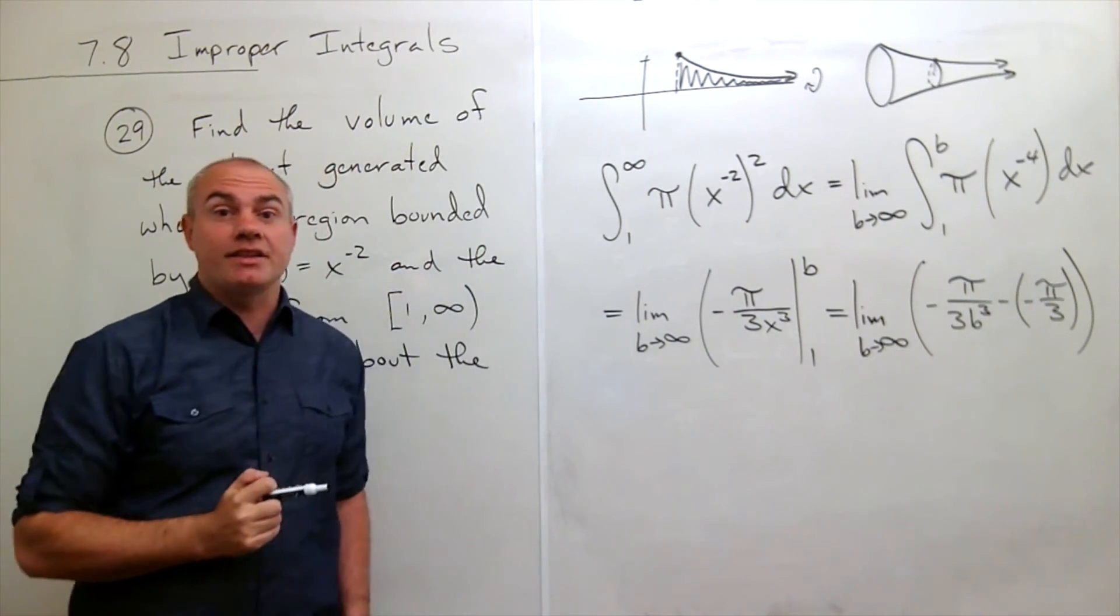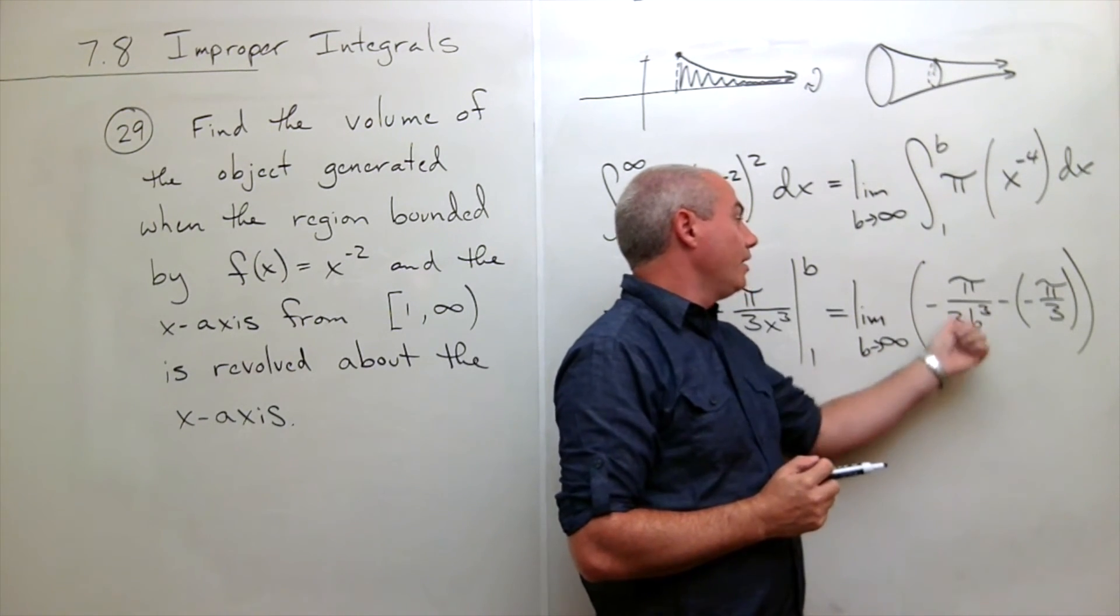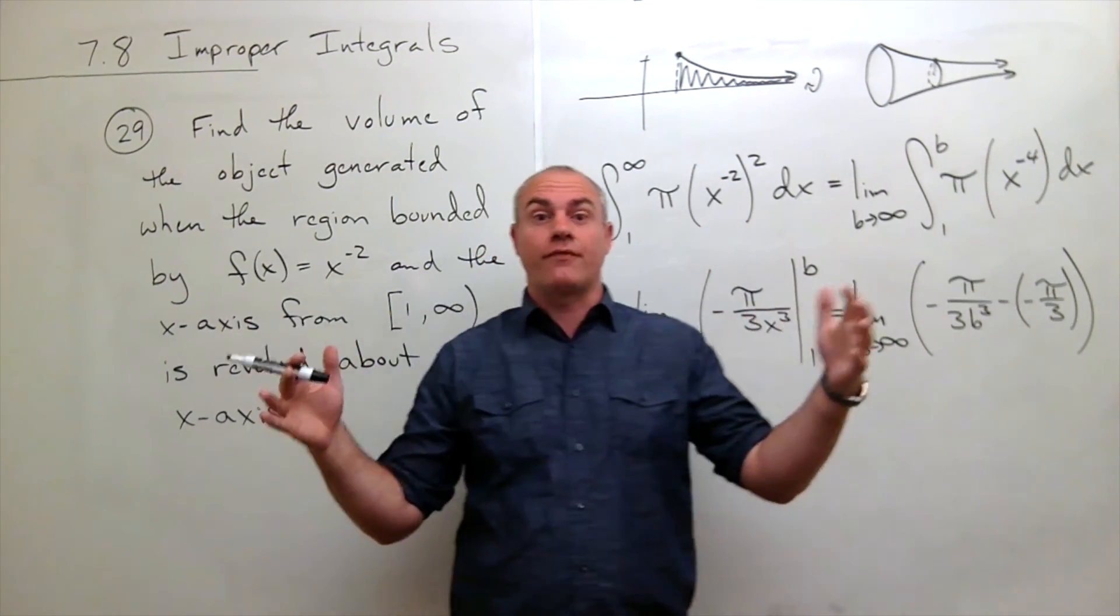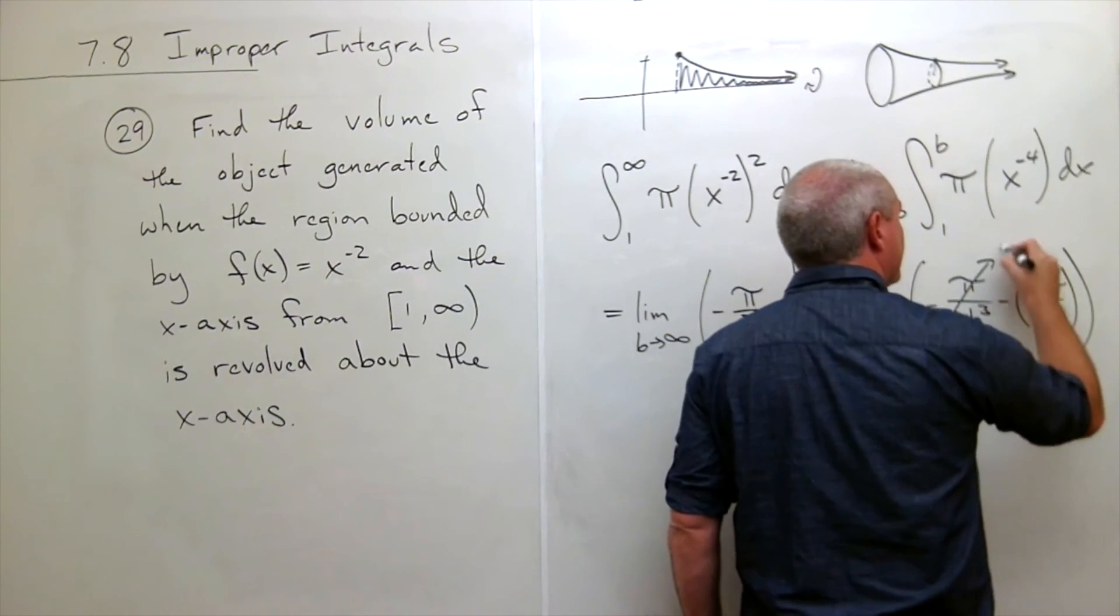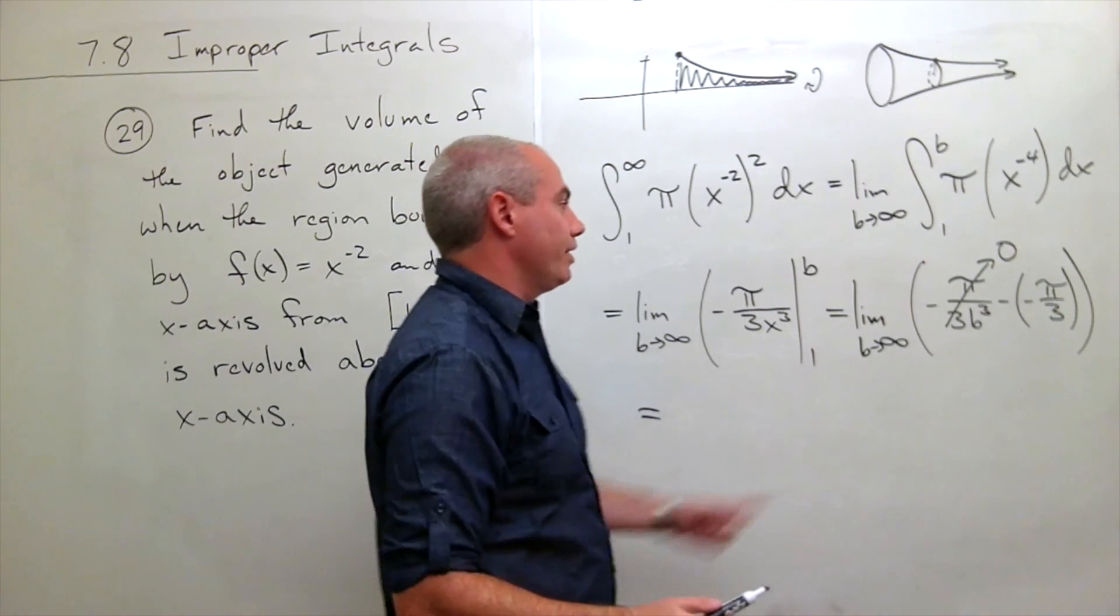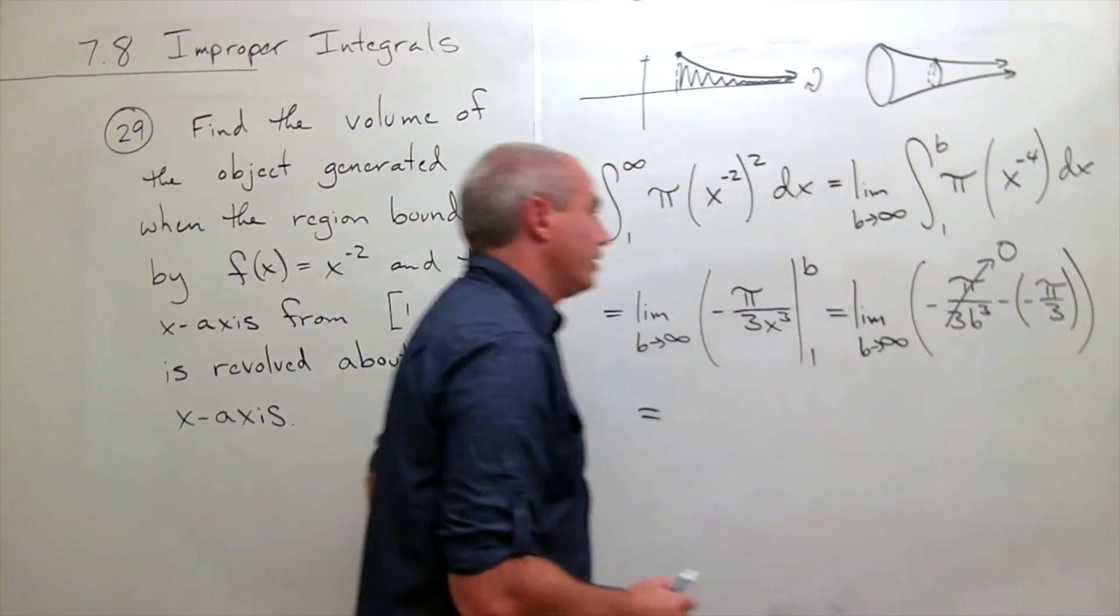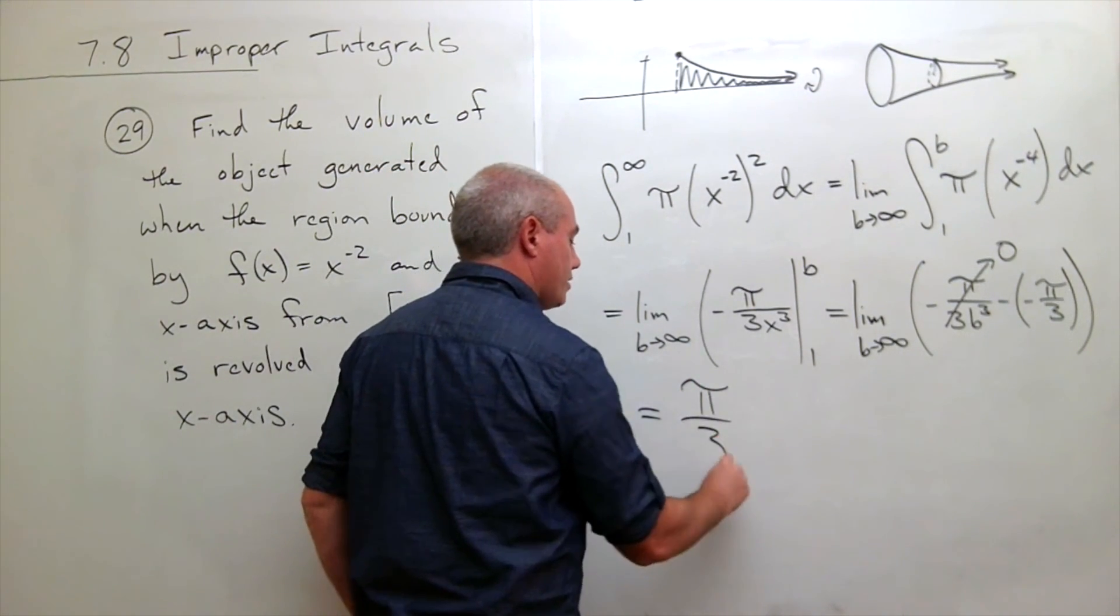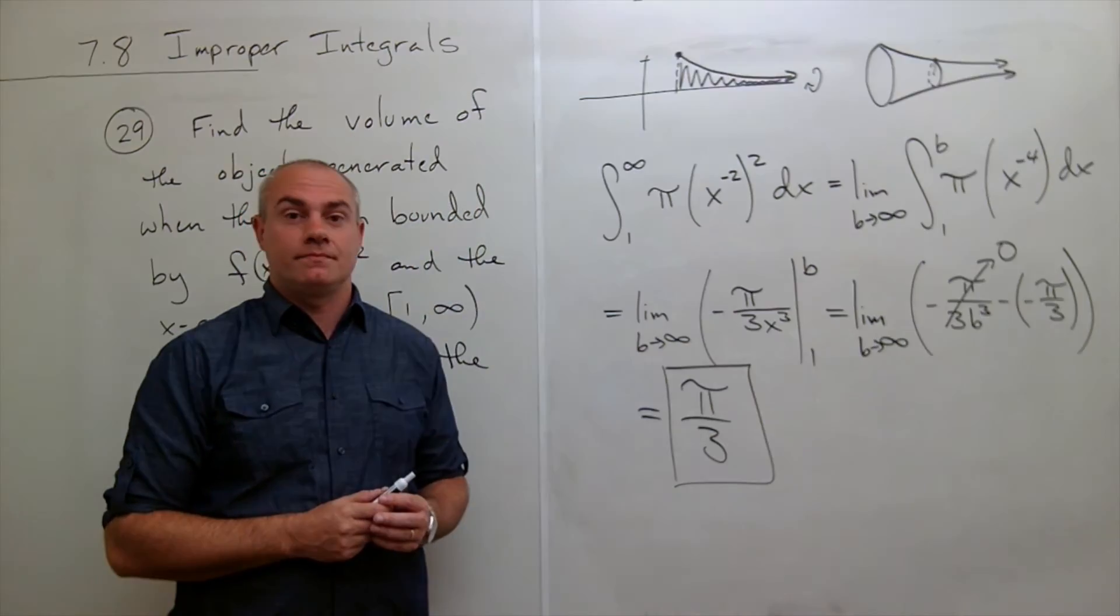Now I'm ready to take the limit as b goes to infinity. As b goes to infinity, this thing gets huge on the bottom. When the bottom gets huge, the fraction gets tiny. So this whole fraction is going to 0 as b goes to infinity. And so what am I left with? Just this term over here. I've got a minus minus pi over 3, otherwise known as pi over 3. And we are done! That's great.